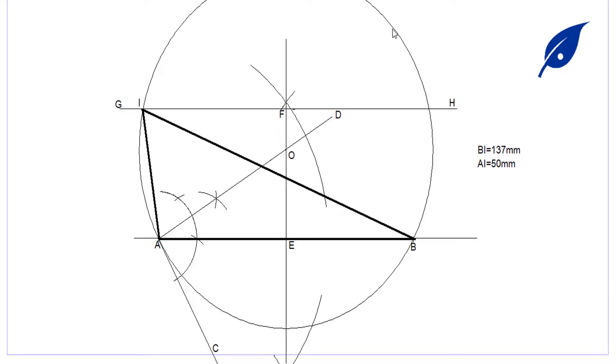And the length of AI is given as follows, which will give us the required angle. And the angle AIB is 60 degrees. Thank you for watching this video. Make sure to subscribe to this channel.